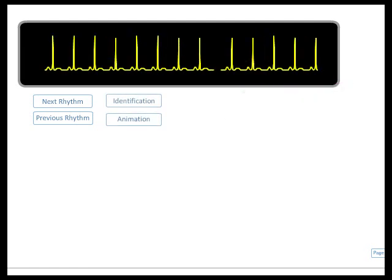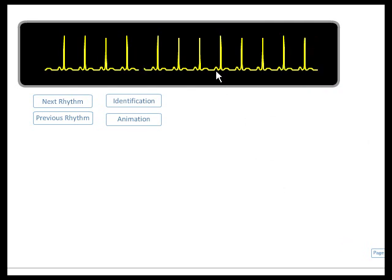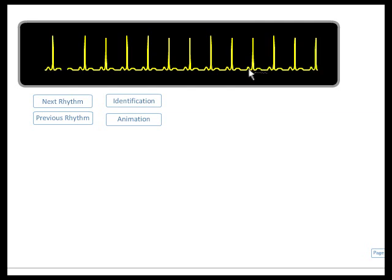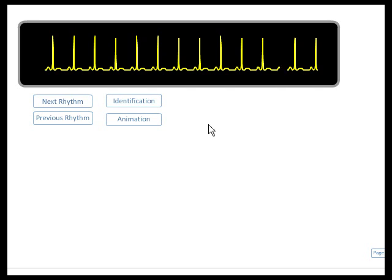In this slide, we have a regular rhythm with a P wave in front of every QRS. The PR interval is constant with normal width, and the QRS is narrow. The rate is about 130 to 140.